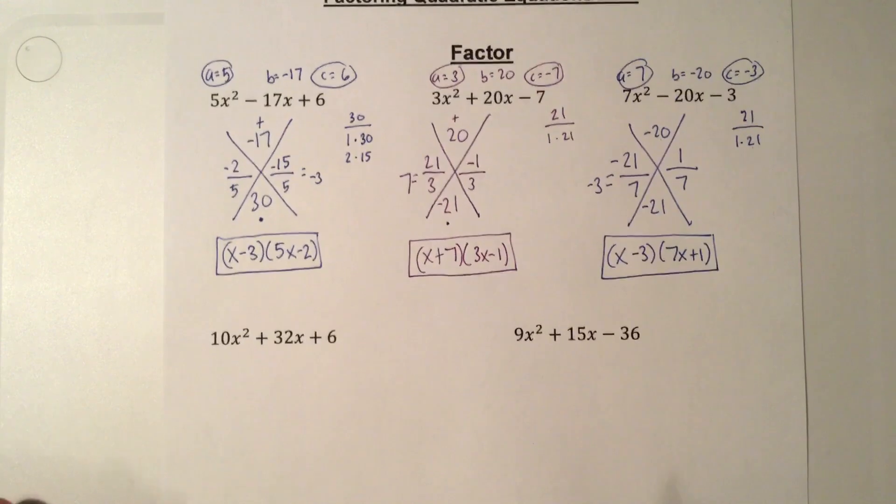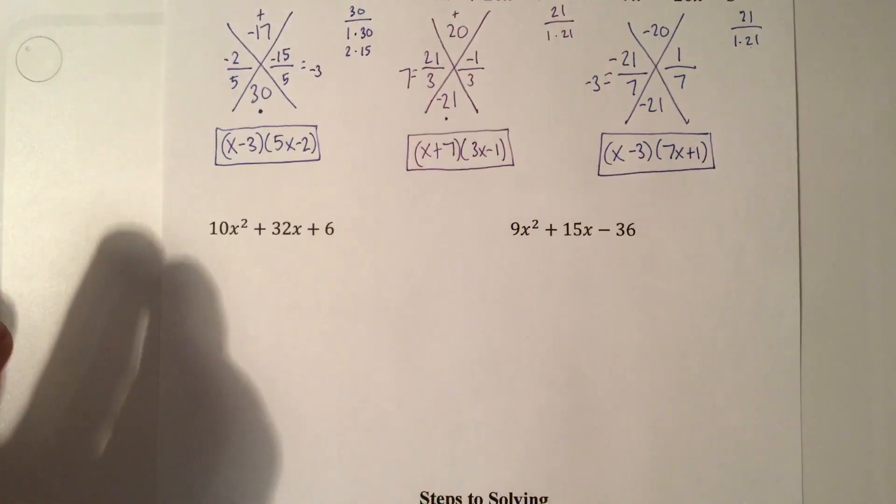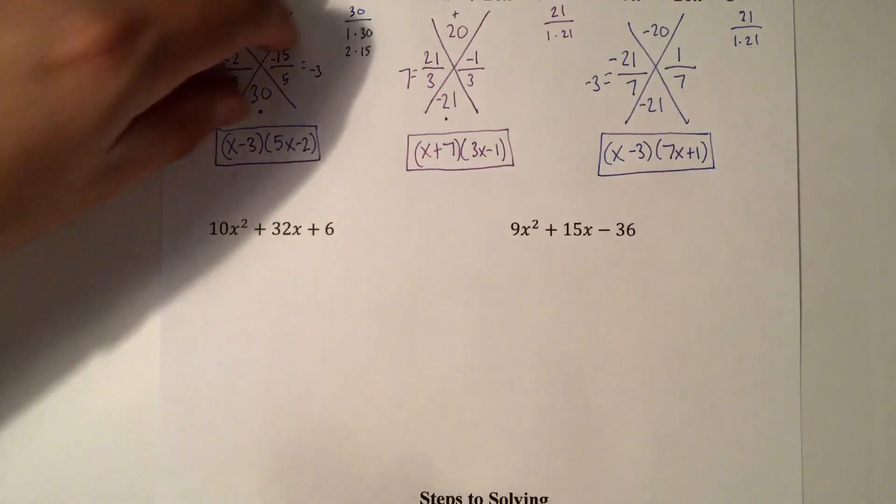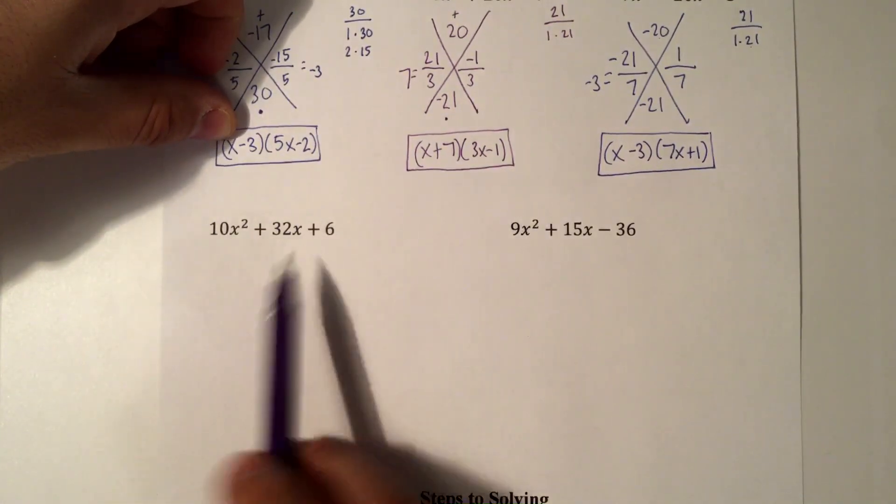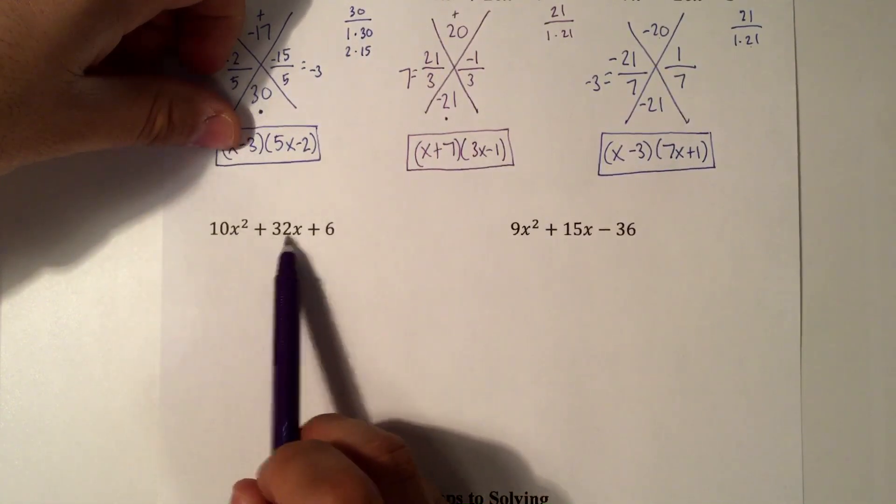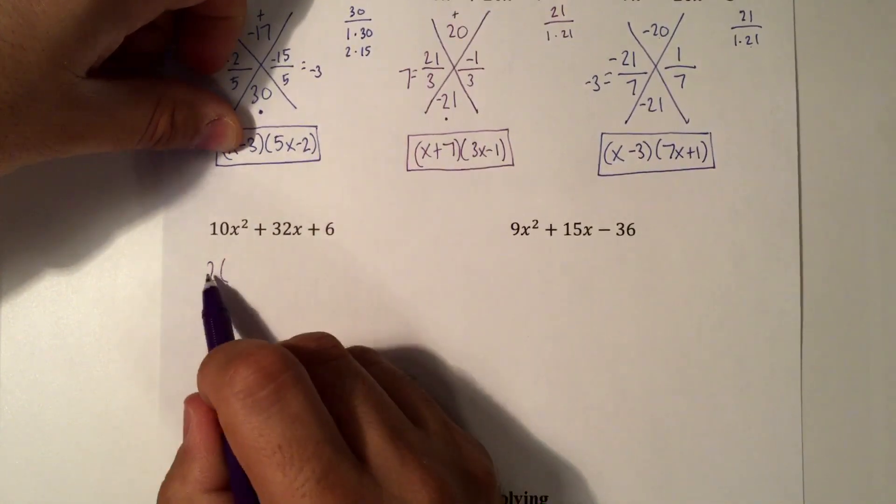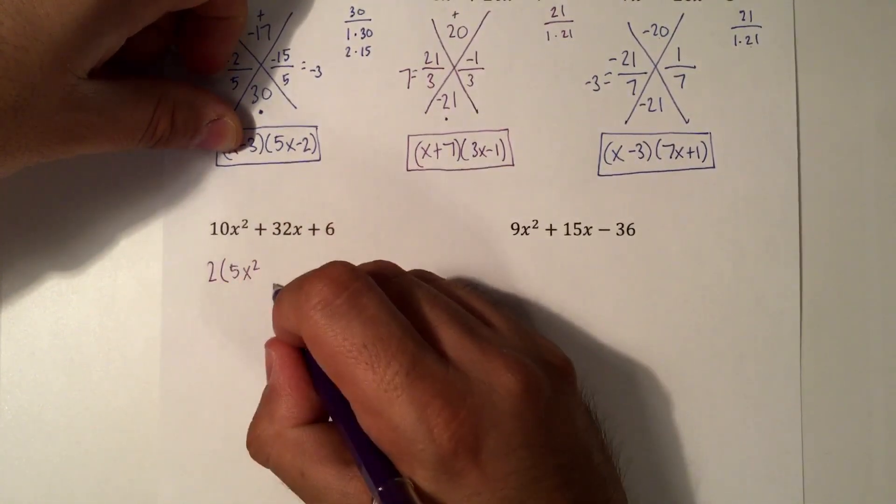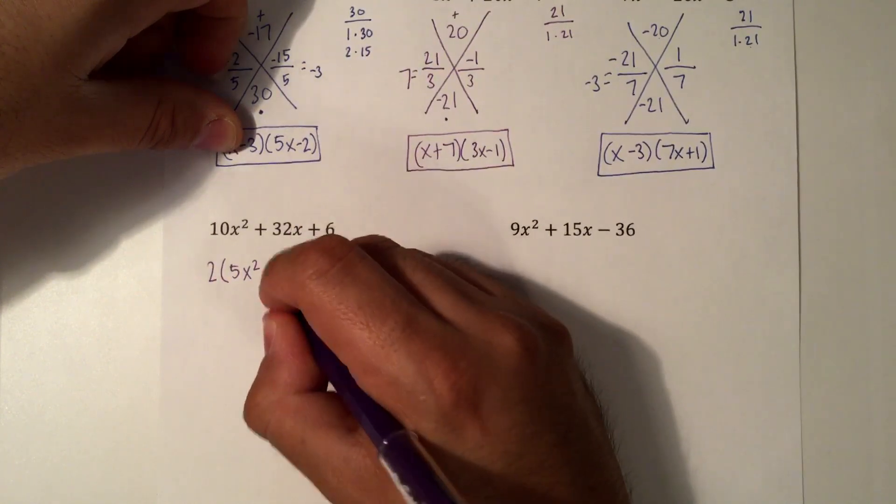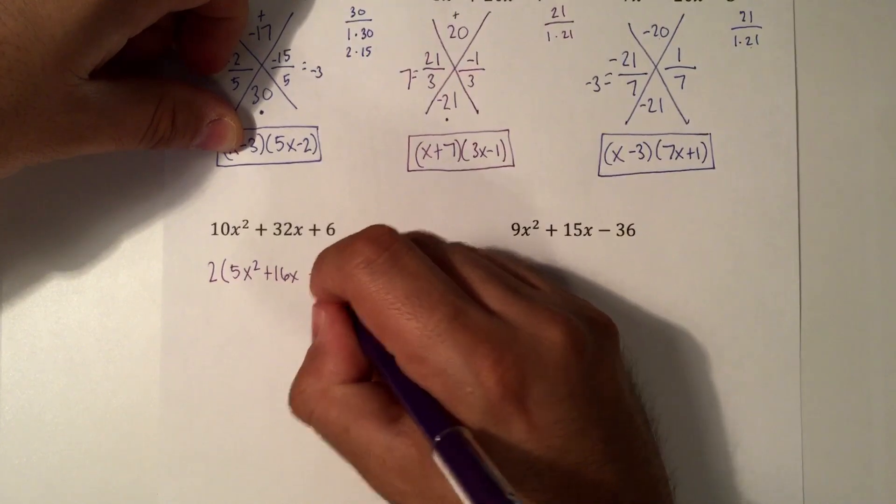You can see they're all consistently the same. Now, the next two examples, let's take a look at these. First off, is it in standard form? Yes. Do we have a greatest common factor? Actually, we do this time. We can see that 10, 32, and 6 are all divisible by 2. So then 2 times 5x squared is 10x squared. 2 times 16x is 32x. And 2 times 3 is 6.